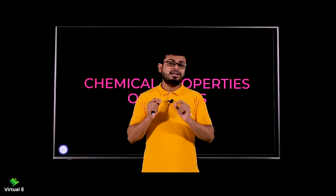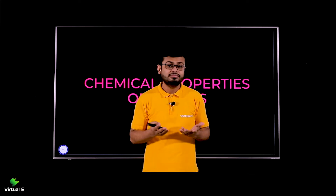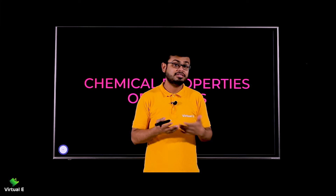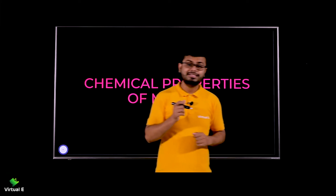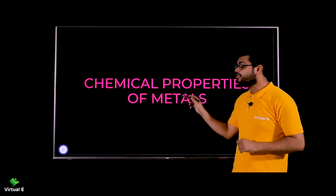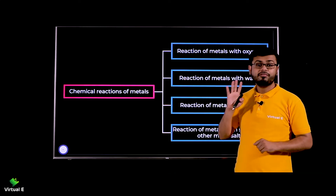We discussed physical properties and chemical properties. Now we will see how the metal reacts with some other substances and what it creates. Let's take oxygen or water — let's see what reactions we are going to discuss in reference to the metals. Basically four reactions we are going to discuss.